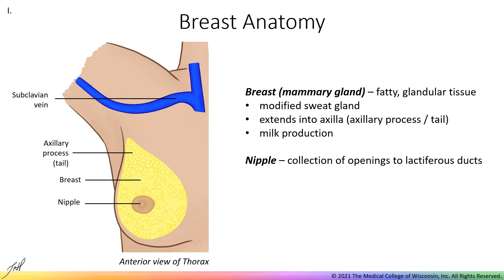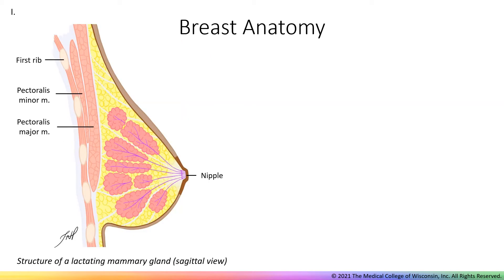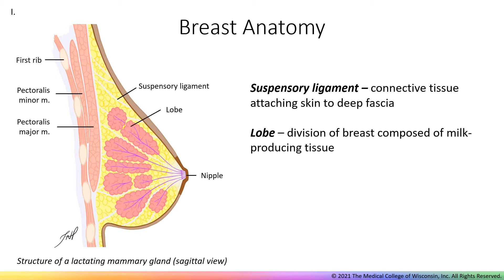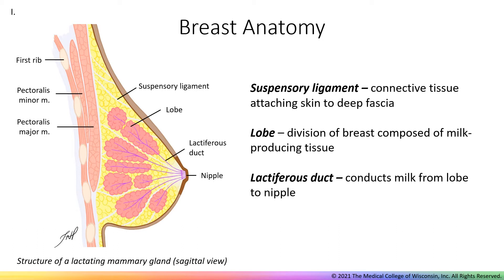Superficially, we can see the nipple, which is a collection of openings from lactiferous ducts. In those with underdeveloped breasts, the nipple overlies the fourth intercostal space. The nipple is surrounded by a darkened region of skin referred to as the areola. Breasts contain suspensory ligaments made of connective tissue that connect the skin to the deep fascia overlying the pectoral muscles. Ovarian estrogens encourage growth of lobes and ducts during puberty, and placental estrogen during pregnancy encourages further growth. Lobes are the glandular tissue capable of producing milk, and milk from each lobe is drained through a lactiferous duct, which conducts milk out of the body through the nipple.